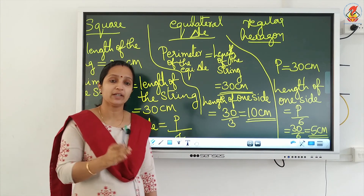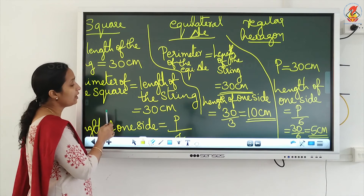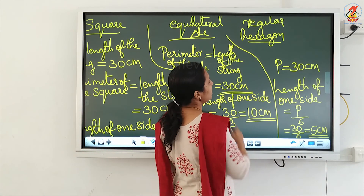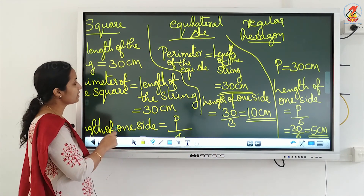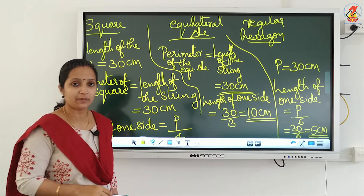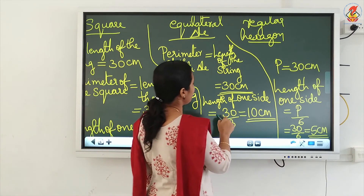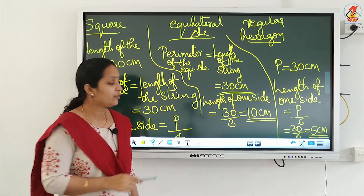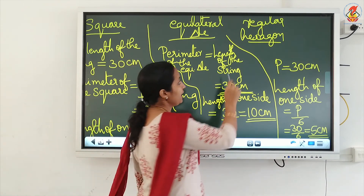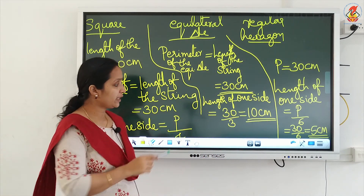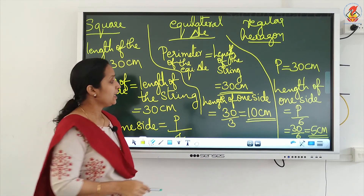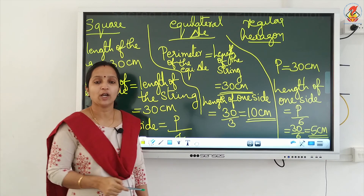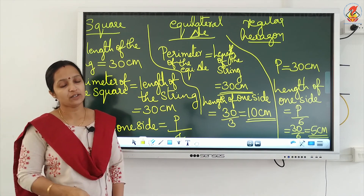By using the same string we formed a square with side 7.5 centimeter, an equilateral triangle with side 10 centimeter, and a regular hexagon with side 5 centimeter. Regular means all 6 sides are equal, so we divide by 6. For the equilateral triangle, we divide by 3 since all 3 sides are equal. I hope the answers are clear. That is all for today, thank you.